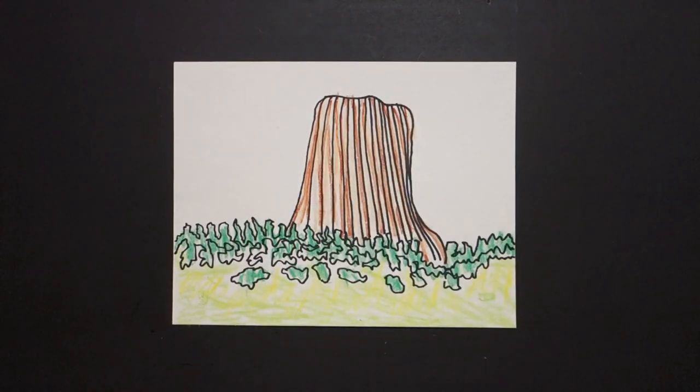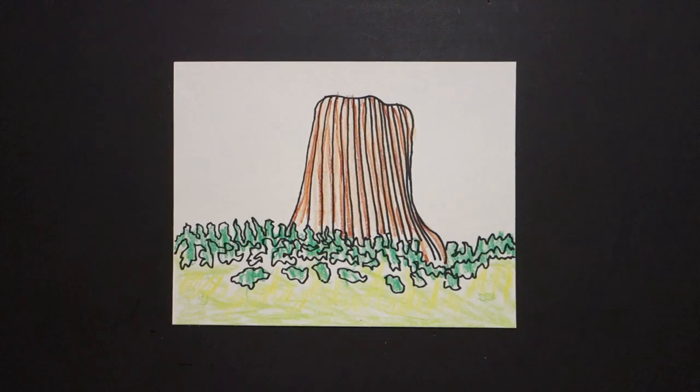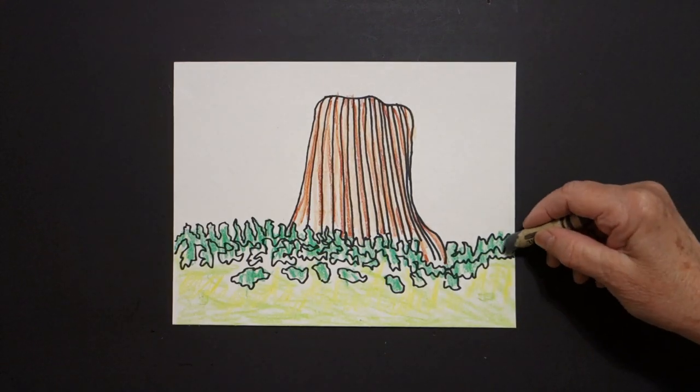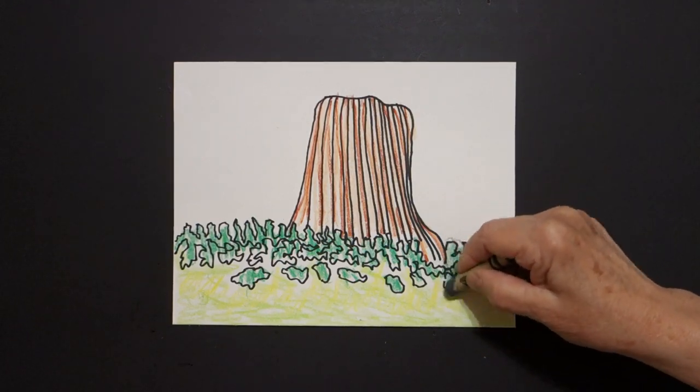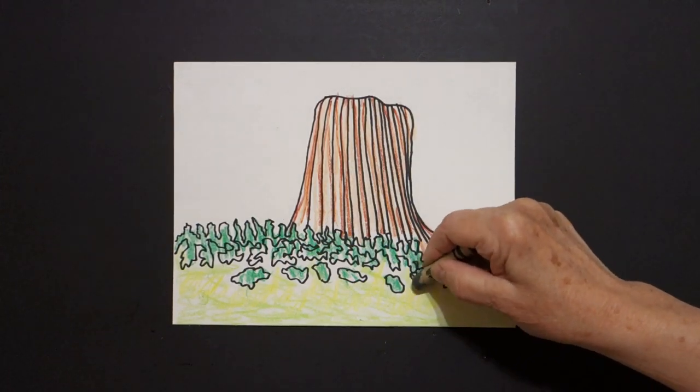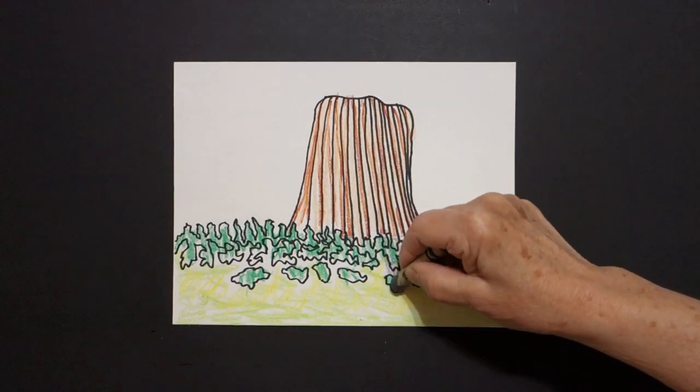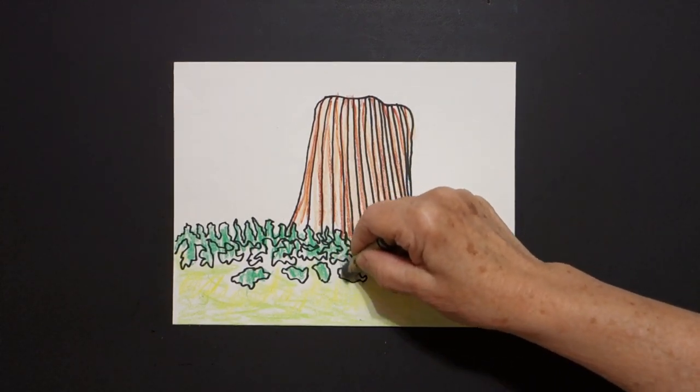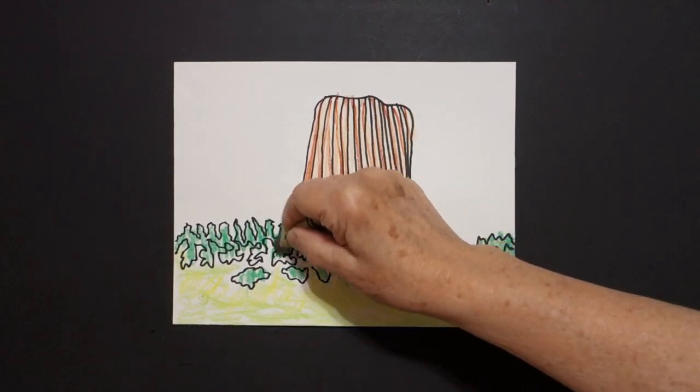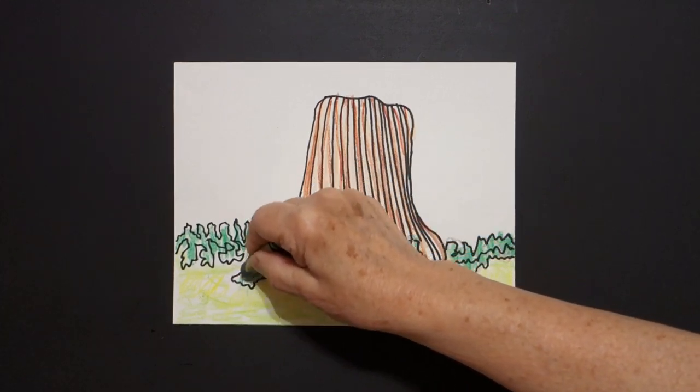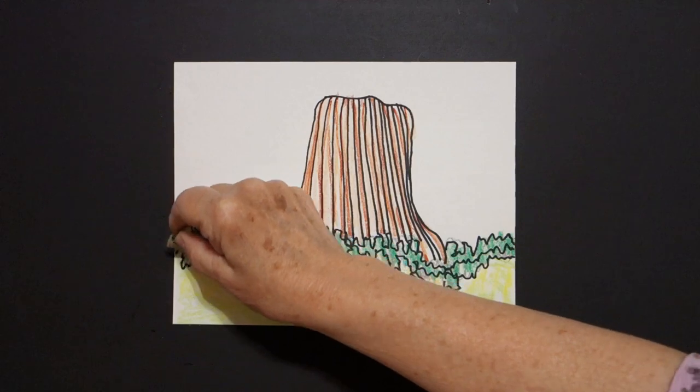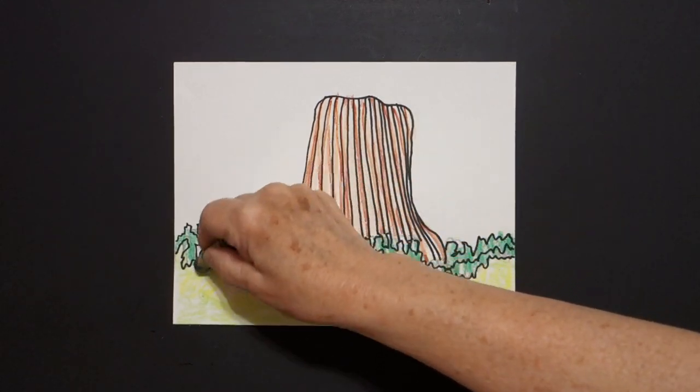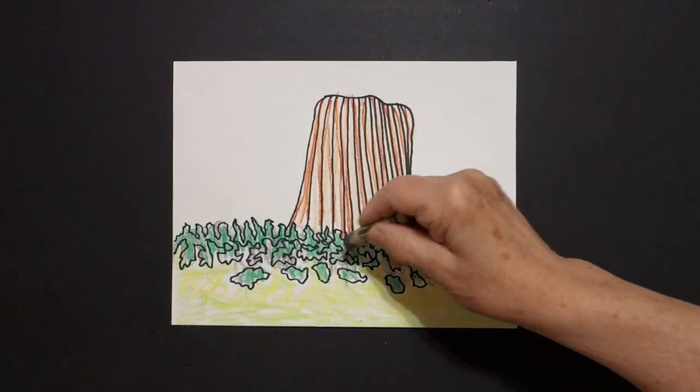Because then, we're going to come in with a gray, and that is what we're going to unify the whole tree line with. We're going to put gray, loop-de-loop it, over all of the darker green, and that's going to unify the whole entire tree line, okay?